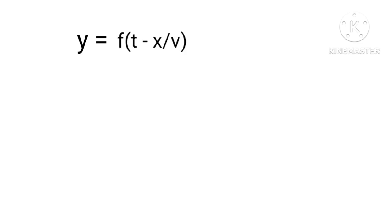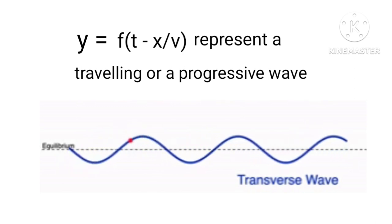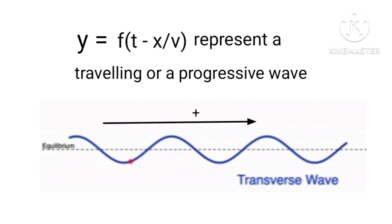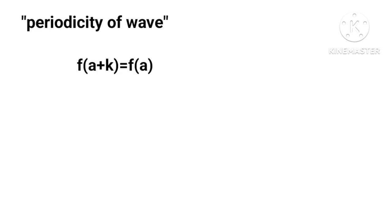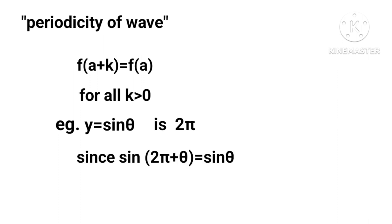The equation y = f(t - x/v) represents a traveling wave or progressive wave moving in the positive x direction with constant speed v. The condition for a function to be periodic is f(a + k) = f(a) for all k greater than zero; after this value of k the function repeats itself. For example, the periodicity of y = sin(θ) is 2π, since sin(2π + θ) = sin(θ).